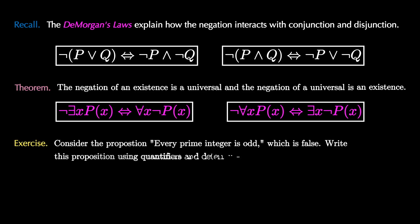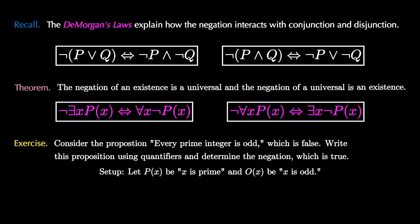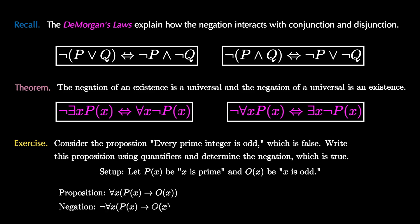Let's see the quantifier negation laws in action. Consider the proposition 'every prime integer is odd,' which is a false proposition. Let P(x) be the predicate 'x is prime' and O(x) be 'x is odd.' The proposition has the form 'for all x, P(x) implies O(x).' To negate this, we put a not symbol in front, and using the second quantifier negation law, that's equivalent to 'there exists x such that it's not the case that P(x) implies O(x).' Negating the conditional gives us 'there exists x such that P(x) and not O(x)' — that is, there is a number that is prime and even. Can you think of which number that might be?